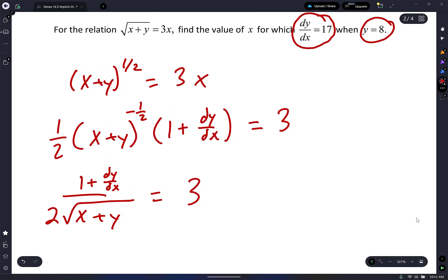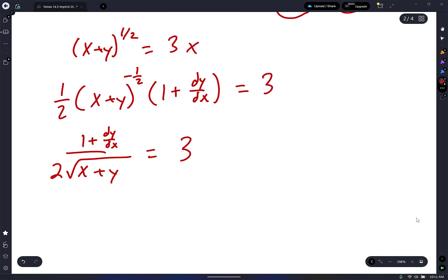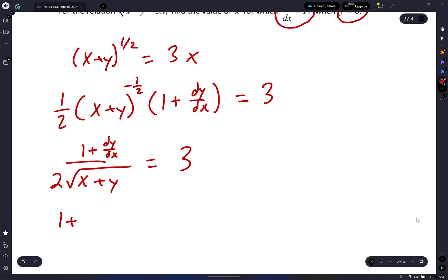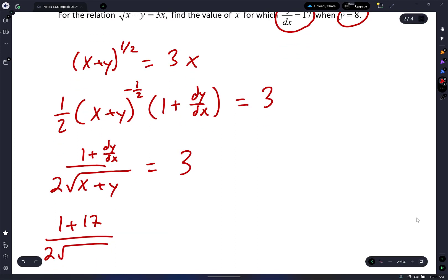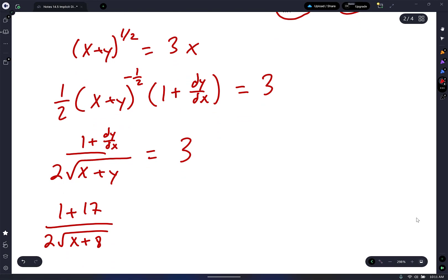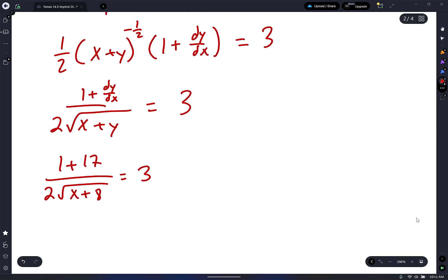I'm about to plug in 17 and 8. So here we go: (1 plus 17) over 2 square root (x plus 8) equals 3. I'm going to first start by multiplying by 2 square root of x plus 8 to cancel that out. So when I do that, I have 18 equals 3 times 2 square root of x plus 8.